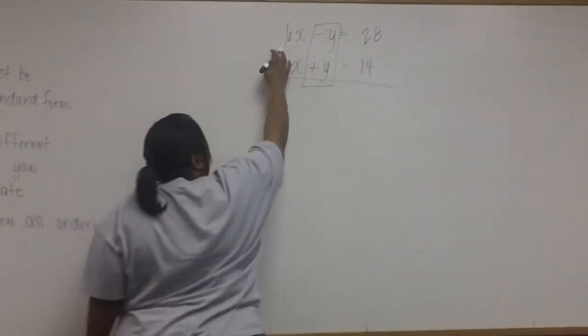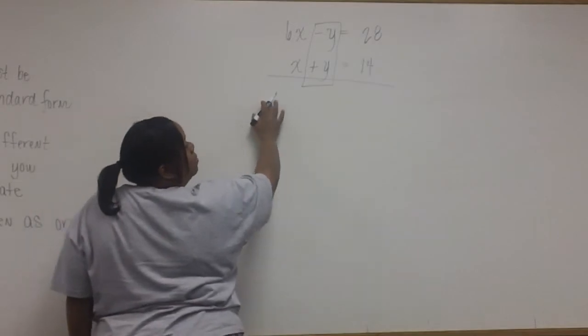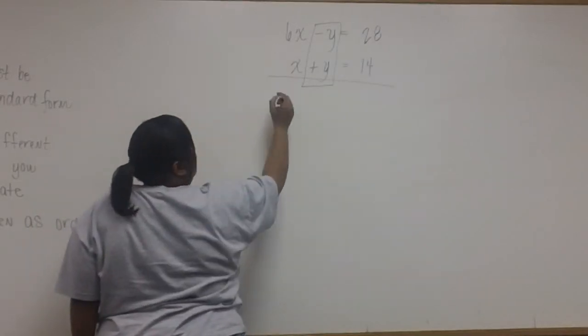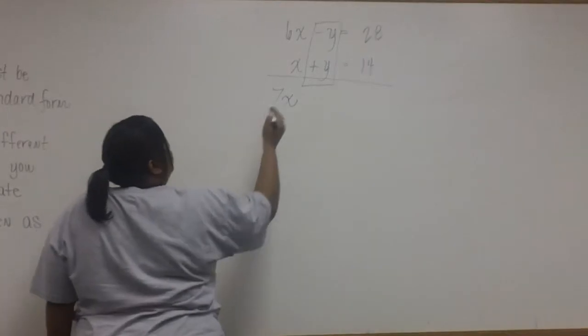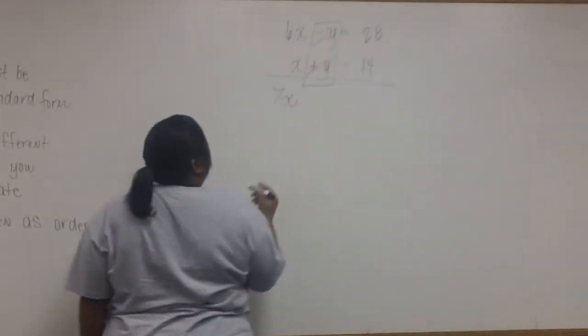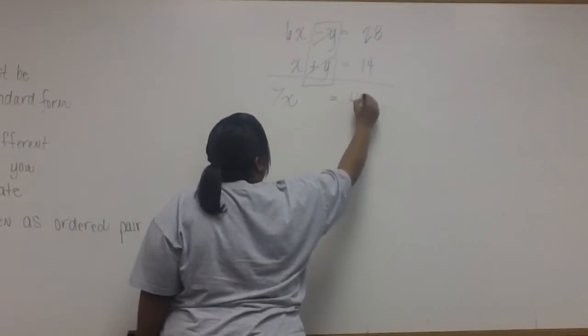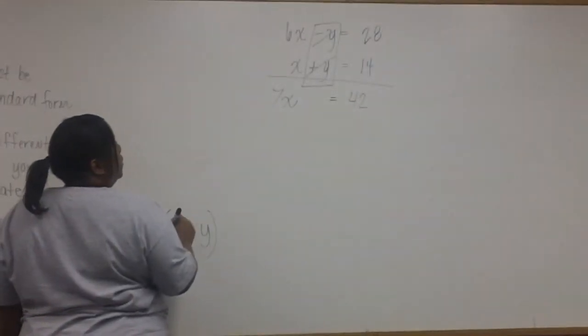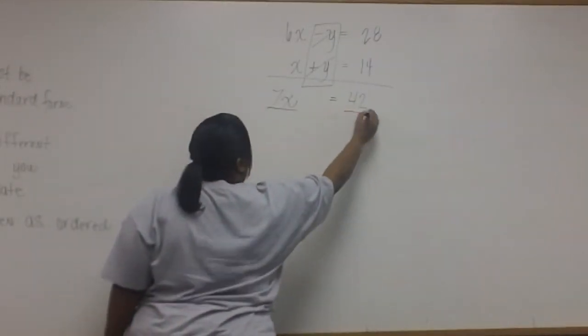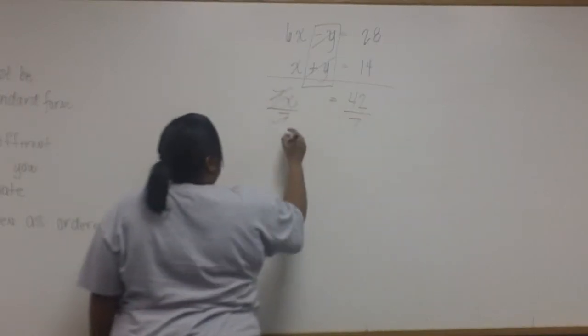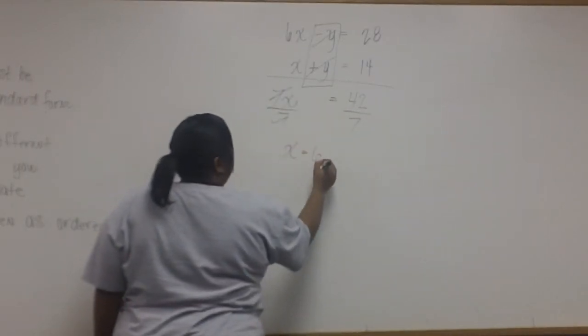So we can go ahead and combine the terms. 6x plus x is 7x. The y's already cancel. And 28 plus 14 is 42. Dividing both sides by 7, we find that x is equal to 6.